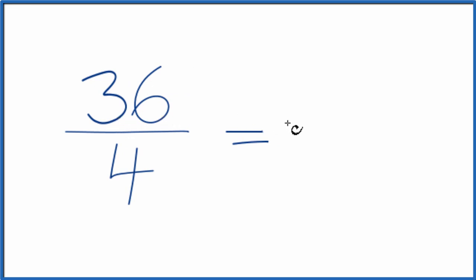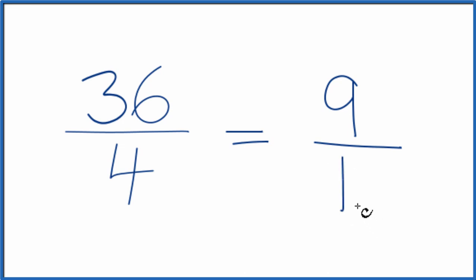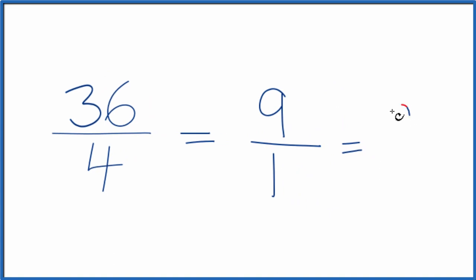Let's divide 36 by 4 — that gives us 9. Divide 4 by 4 — that gives us 1. So the fraction 36 fourths, we can simplify and reduce that to 9 over 1. And because 9 divided by 1 equals 9, we can also say that 36 fourths equals the whole number 9.